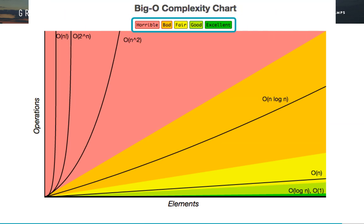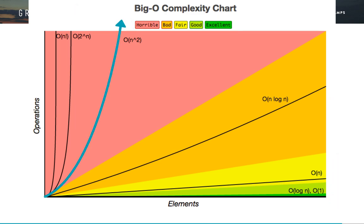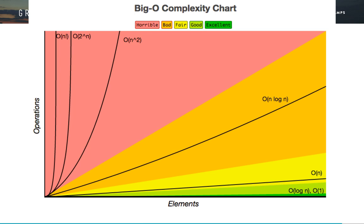In this graph, different ratings of algorithms are shown in excellent, good, fair, bad, and horrible areas. The more quickly the curve goes up, the worse it is. In order from best to worst, the big O categories are: order 1, order log N, order N, order N times log N, order N squared, order 2 to the power N, and order N factorial. The very best is order 1 — this doesn't mean it takes only one operation, but rather that however many operations it takes, it is constant, the same no matter how much or how little data is involved.